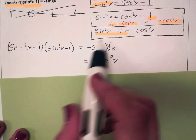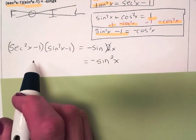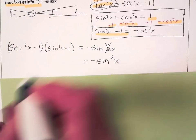So here we go. Now we can replace sec²x - 1 with tan²x.